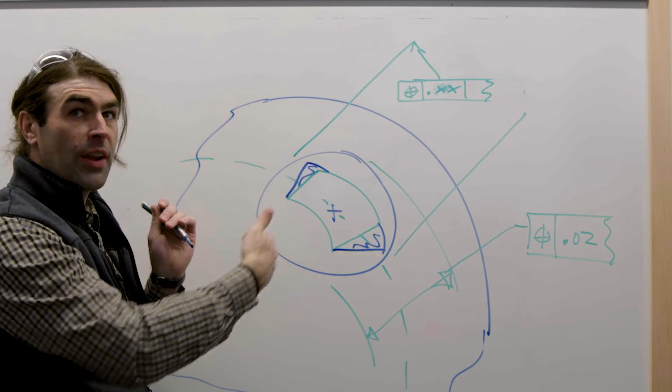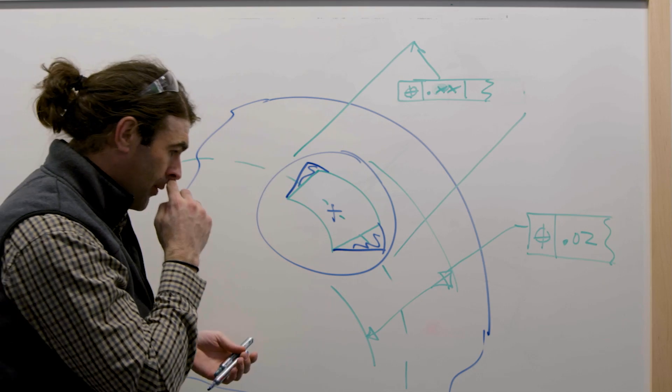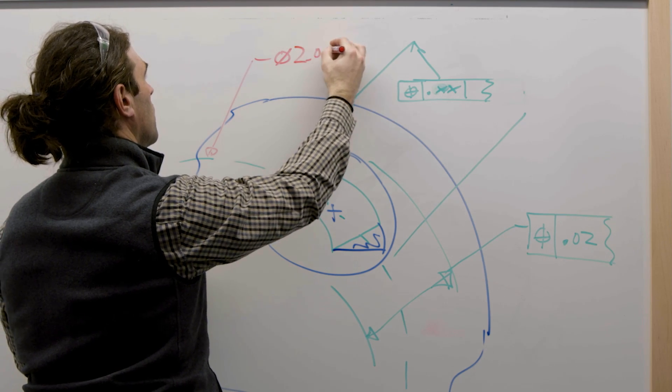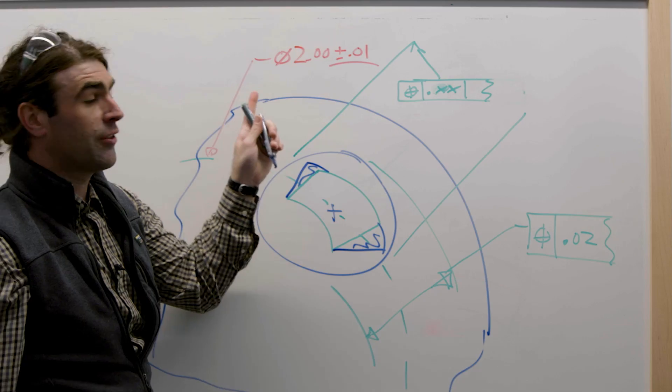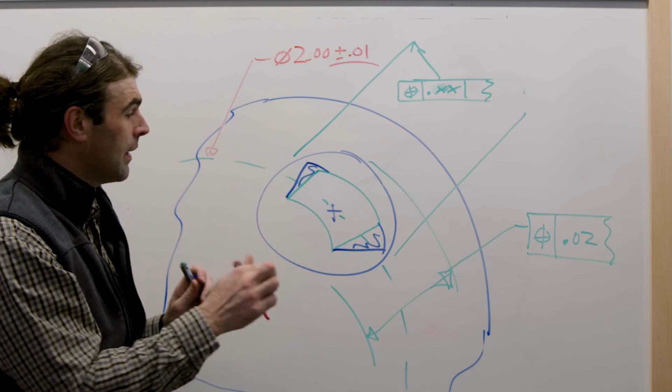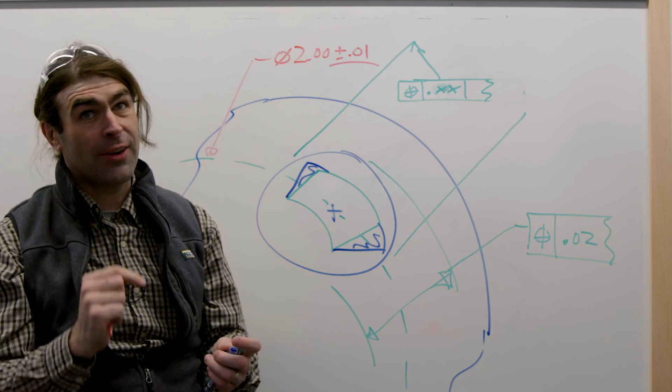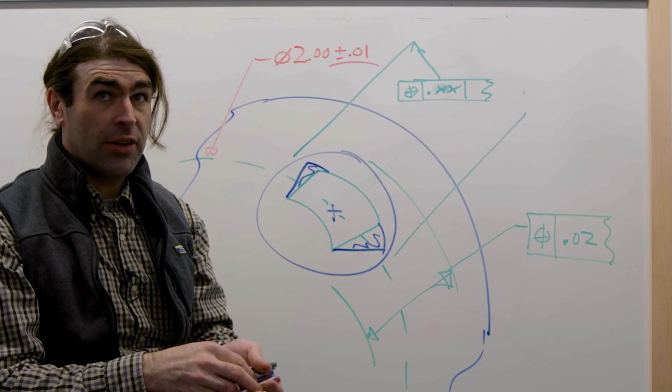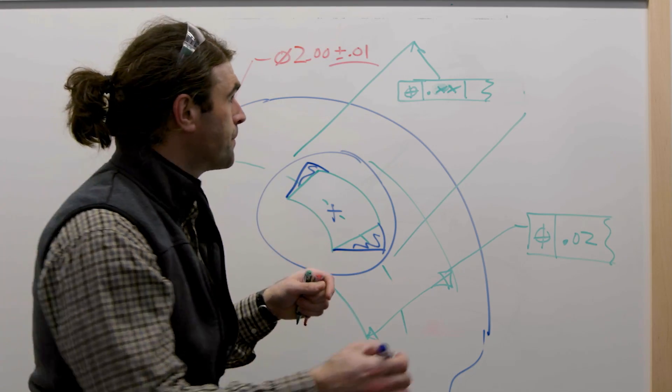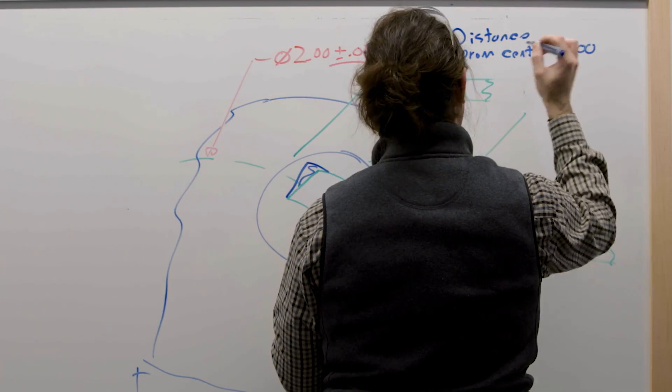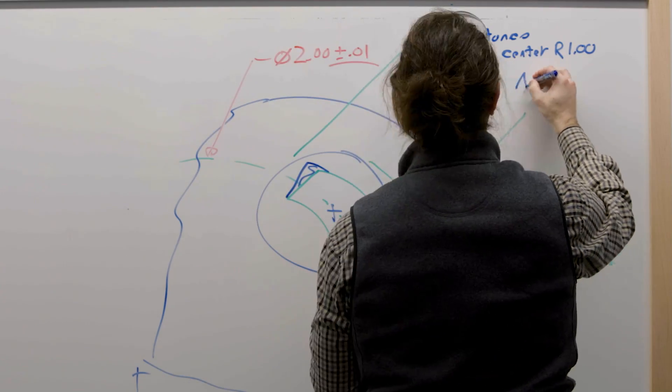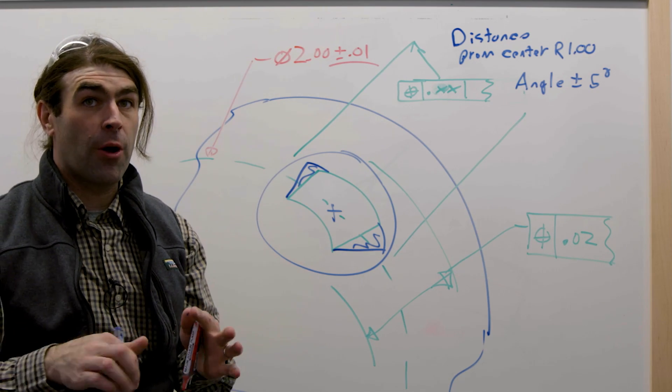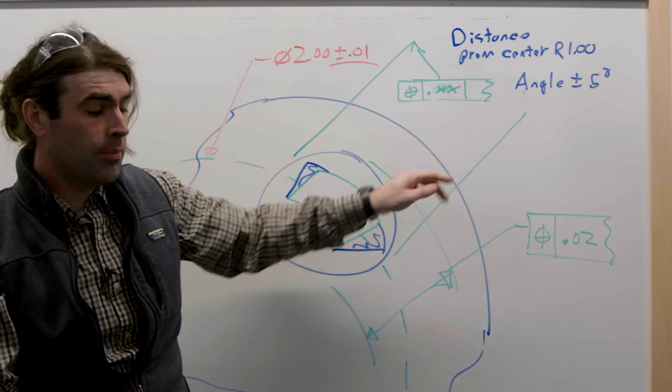For this, the distance from the center, that is a one-to-one swap. So, with this one, you take whatever that tolerance is, total tolerance, and you stick it in here, it's the same. This one is going to be a little trickier. We want to know what is this number. So, the information you need is the distance from the center and the angle. The distance from the center is a radius of one, in our case, and we said before, the angle is plus or minus five degrees. So, with that info, we're going to calculate what this number should be.